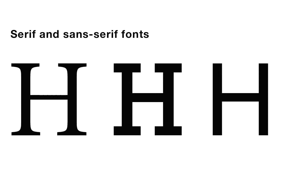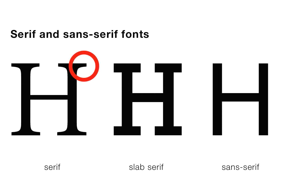Let's now look at different classes of fonts. We've got three different fonts here. The one on the left is a serif font — you can see in the corners of the legs of the characters these wedge-shaped little extra bits, and they're called serifs. The one in the middle is called a slab serif, which has square serifs rather than wedge-shaped ones. The sans serif character on the right has no serifs at all.